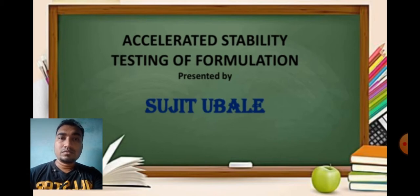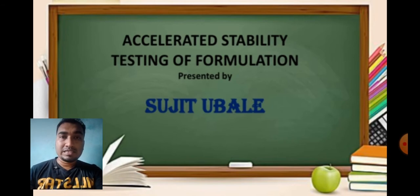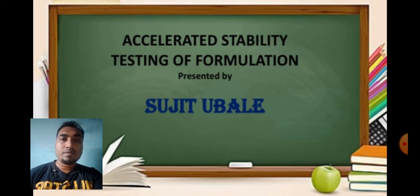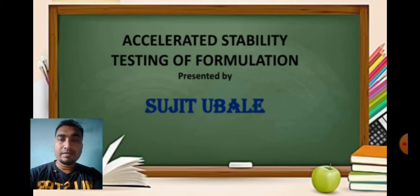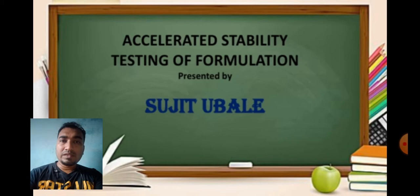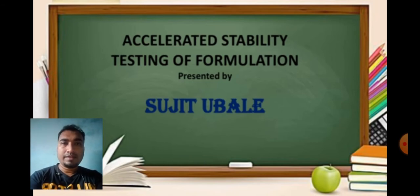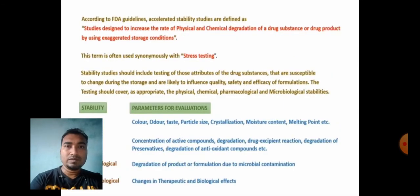Now we will discuss the different steps involved in accelerated stability testing. Suppose there is a dosage form — take the example of tablets — whose accelerated stability is to be performed. Some tablets are kept at 40 degrees Celsius, some at 50 degrees Celsius, some at 60 degrees, and some at 70 degrees Celsius for a specific period of time. Here we have increased the temperature as the main variable.